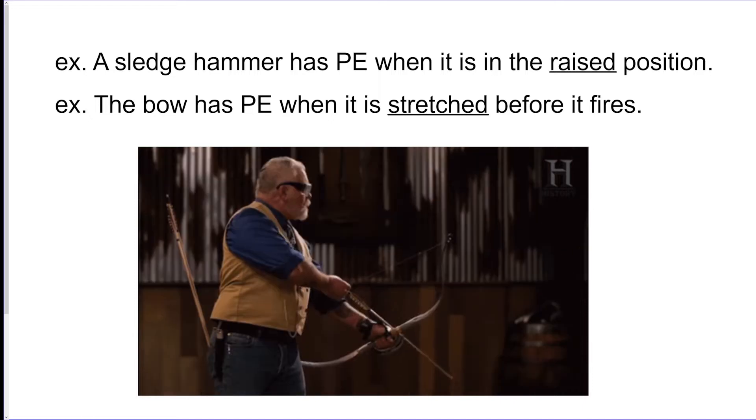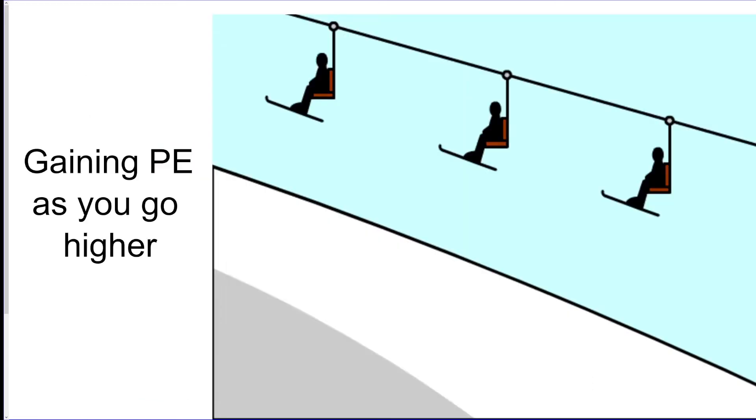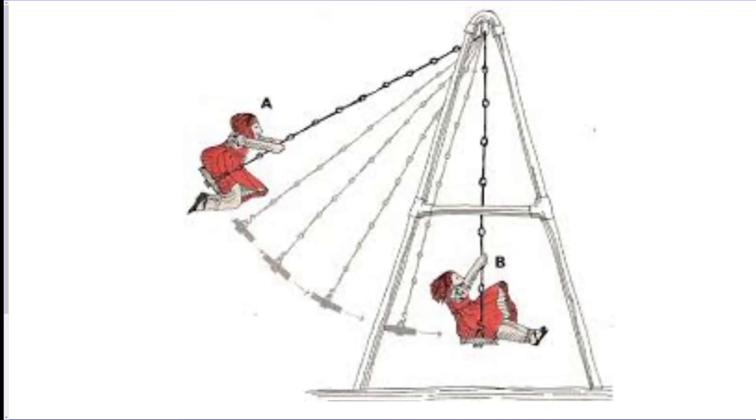A ski lift is a great example because as the person is dragged higher and higher up the mountain, they're gaining more and more potential energy. A swing set is another good example. When the person's back here, this would be when they have the most potential energy because they are highest up, and then all of that energy is translated into speed. The further up they are, the faster they're going to end up going.